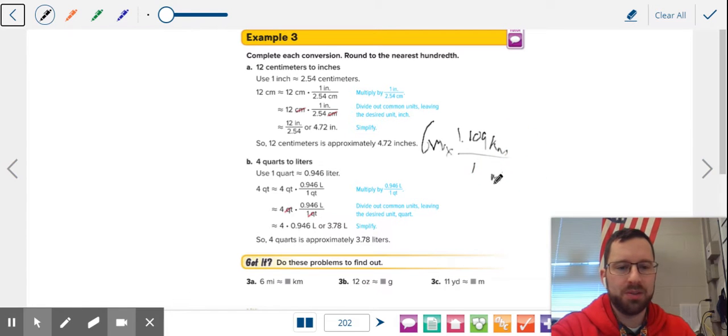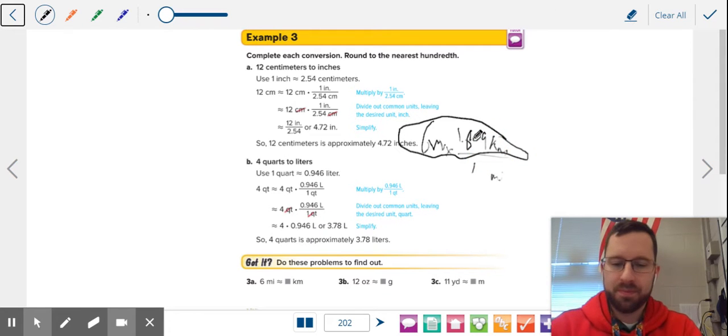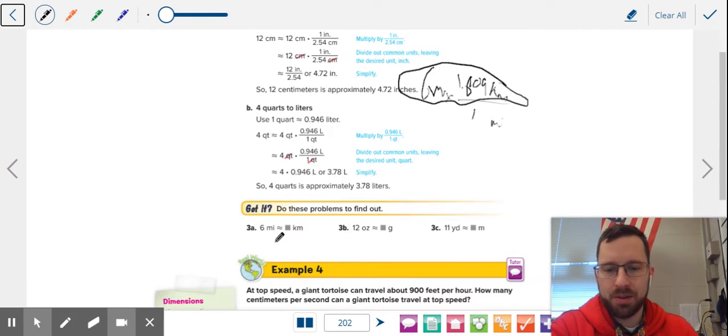And if you set it up this way every time, you'll notice that you're always multiplying. So six times 1.609, if you type it in, is 9.654 kilometers. Boom. And the unit's already written in there, so I'm not going to rewrite it.